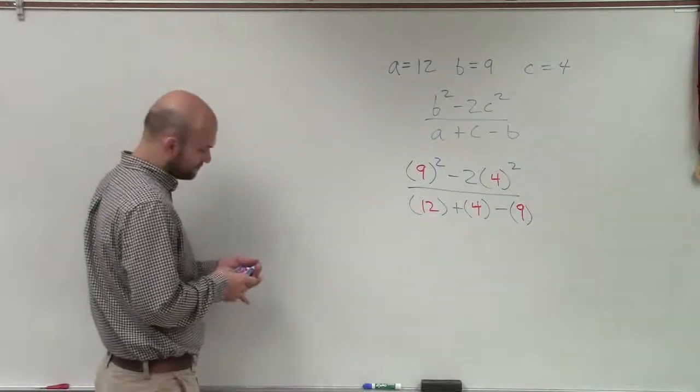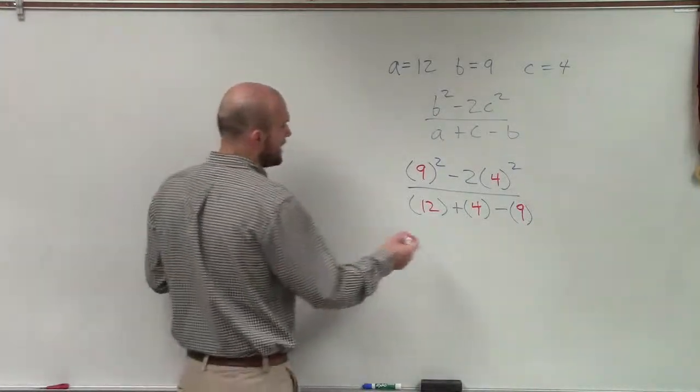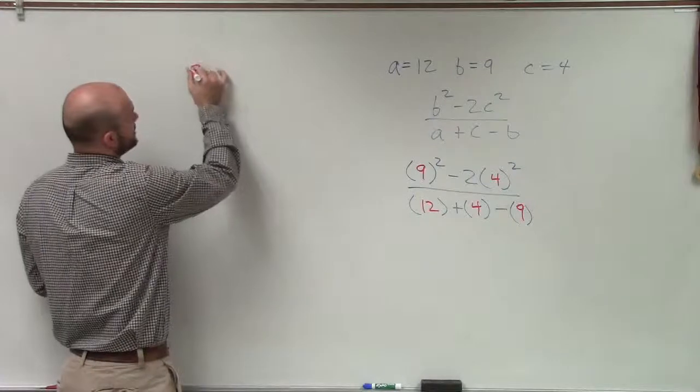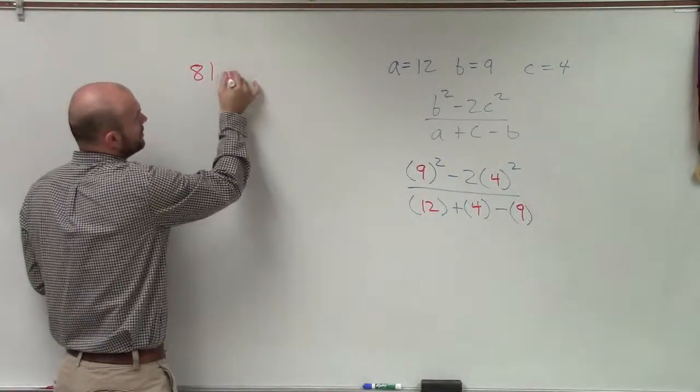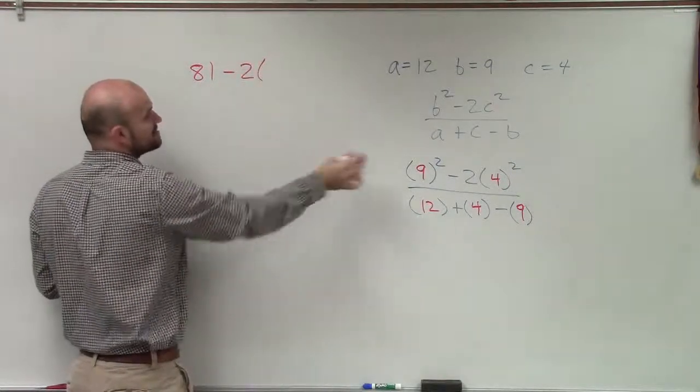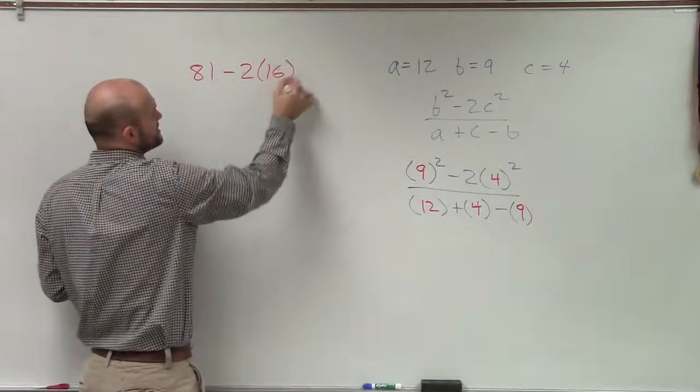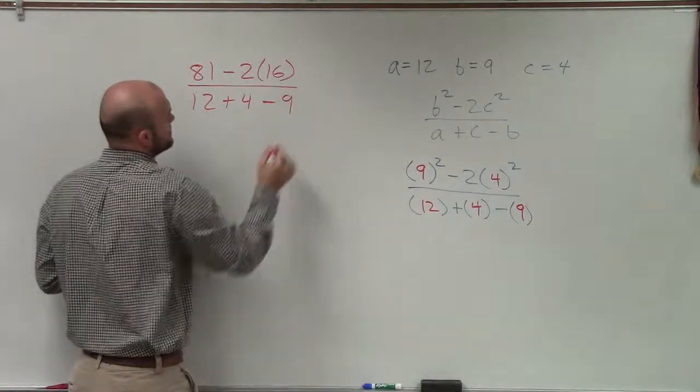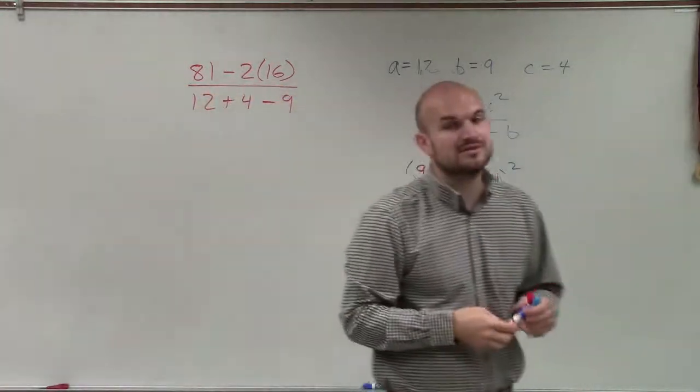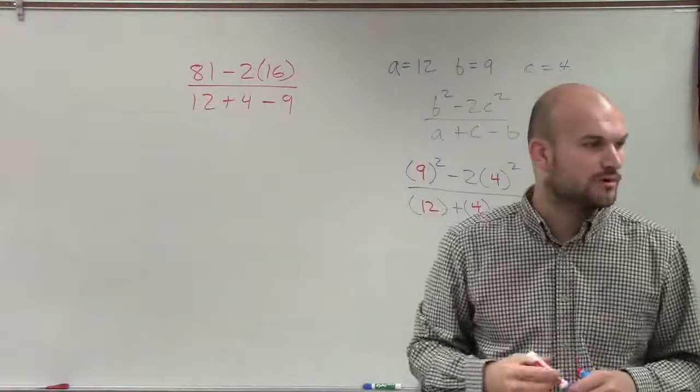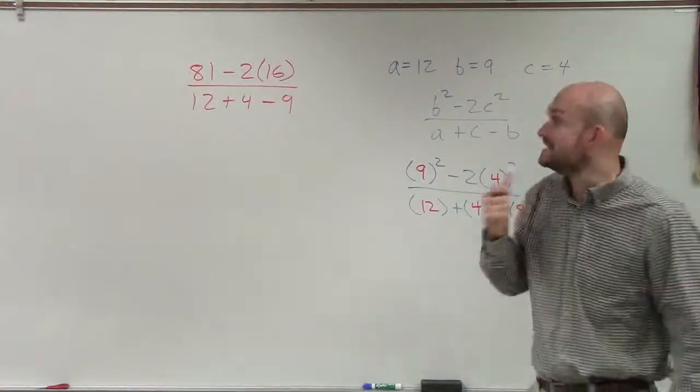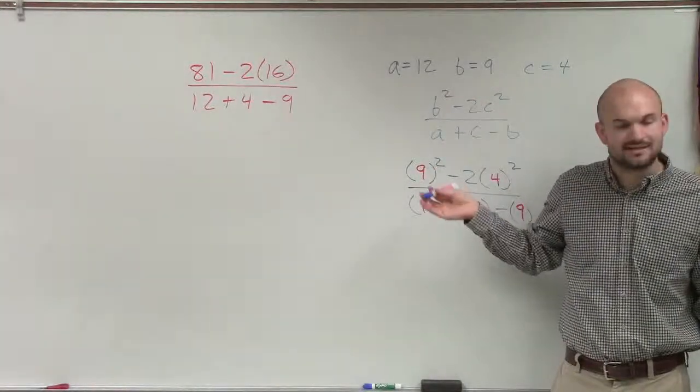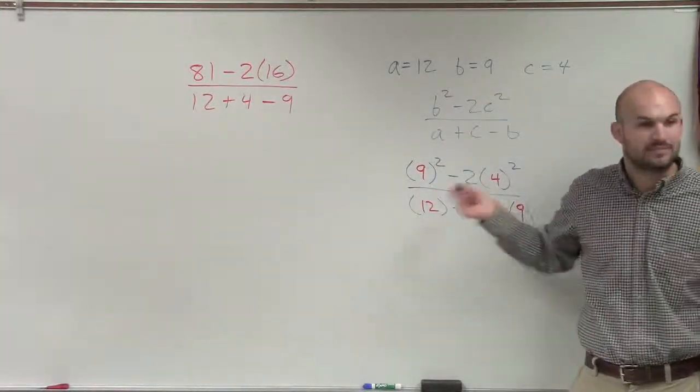So everybody in their problem should have had, so we do 9 squared. I'll just do it over here. 81 minus 2 times 4 squared, which is 16, divided by 12 plus 4 minus 9. All right, that was the critical step. That's where most students went wrong, was they did not do the squaring. They did not, it's not the squaring, but they did not apply the powers first.